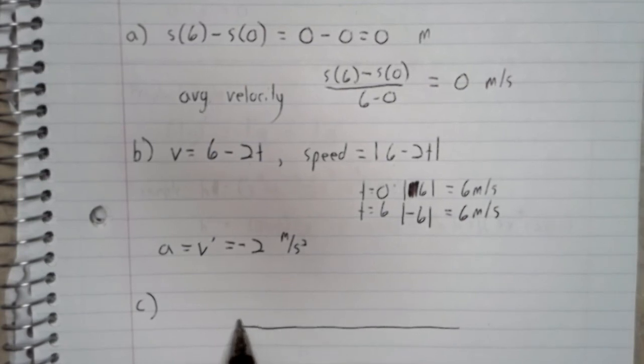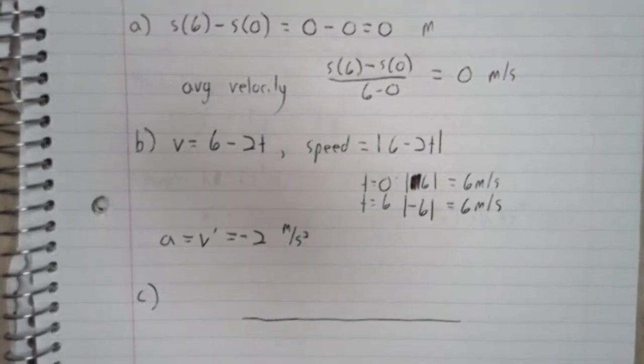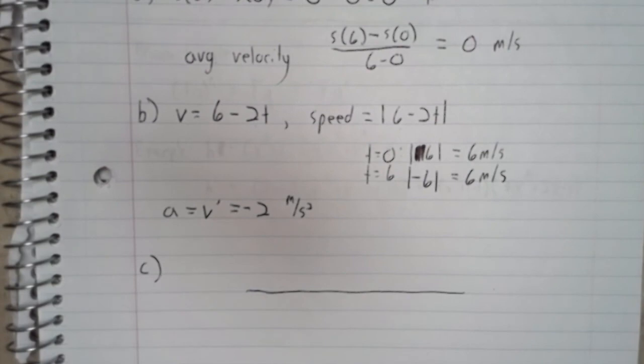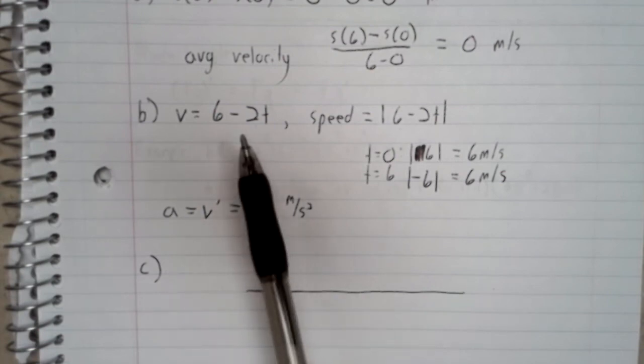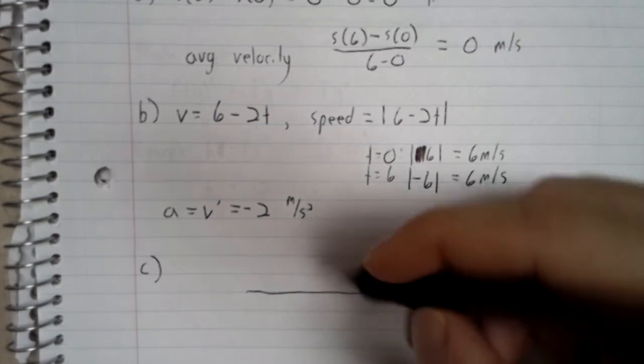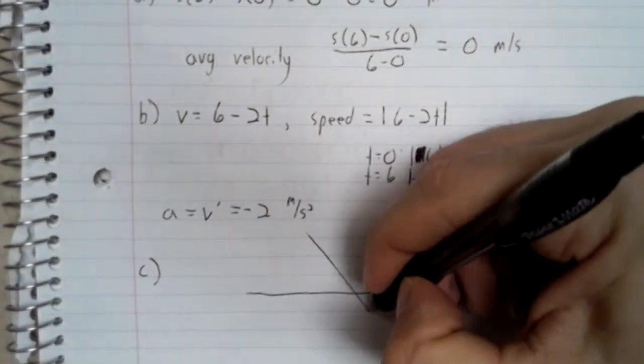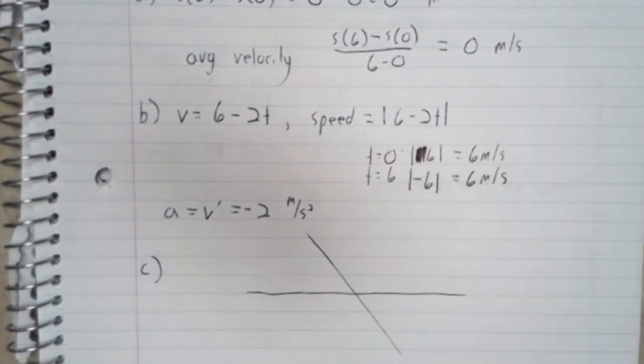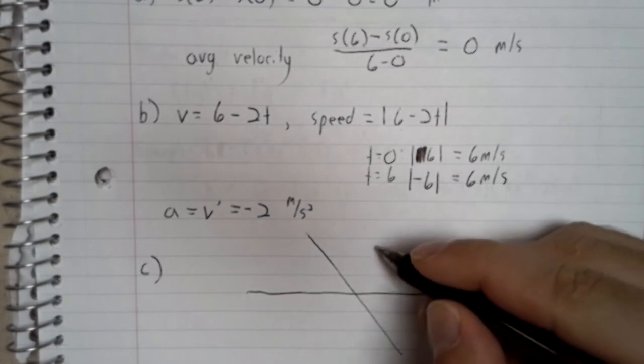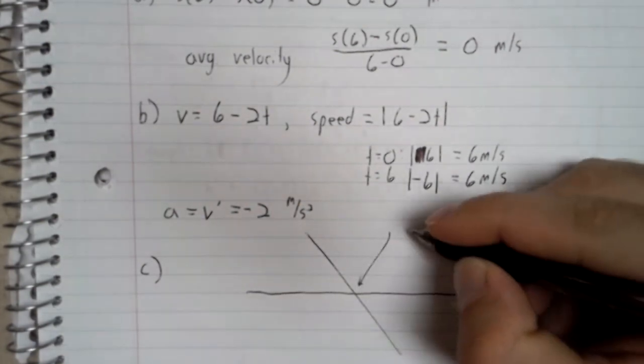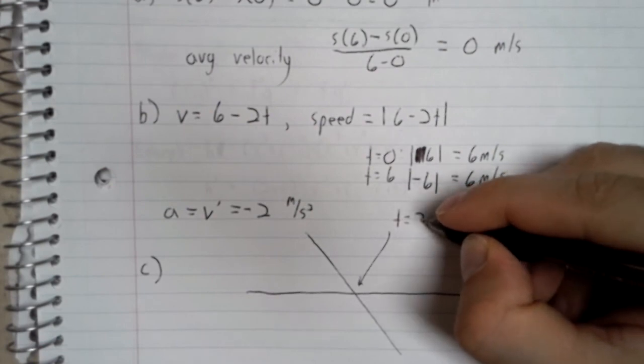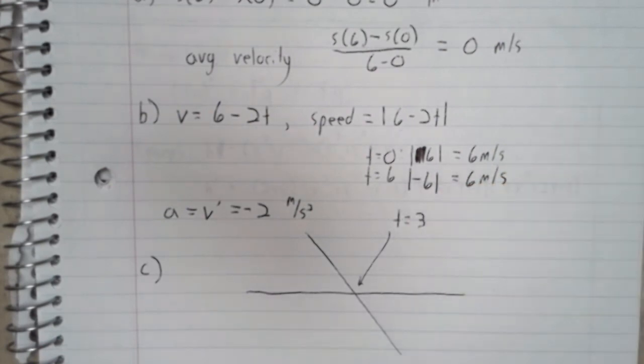So the velocity, there are, I guess, multiple ways you could think about this. The velocity is 6 minus 2t. So the velocity is a straight line with a negative slope. It's 0 when t equals 3.